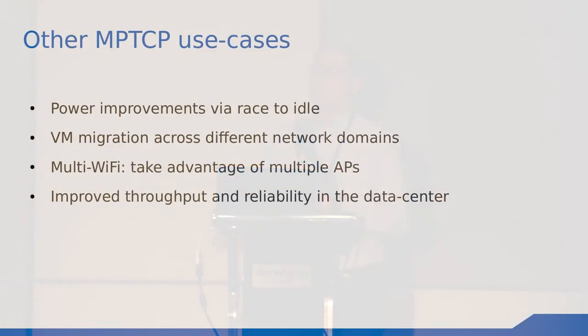There are other interesting multipath TCP use cases. There are papers that talk about how you can reduce power consumption — basically a race to idle: you use both interfaces to get higher throughput, finish the download faster, and then go to sleep faster. Other use cases include the multi-Wi-Fi project, which connects mobile devices to multiple access points to avoid link quality issues. There has also been research in the data center, where spare links can be used with multipath TCP to improve throughput.